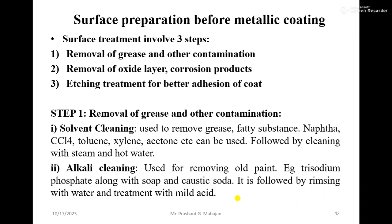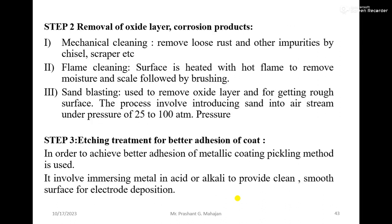Removal of oxide layer or corrosion products can be done by three methods. First is mechanical cleaning — removing loose rust and other impurities using a chisel and scraper. Second is flame cleaning — the surface is heated with a hot flame to remove moisture and scale, followed by brushing.